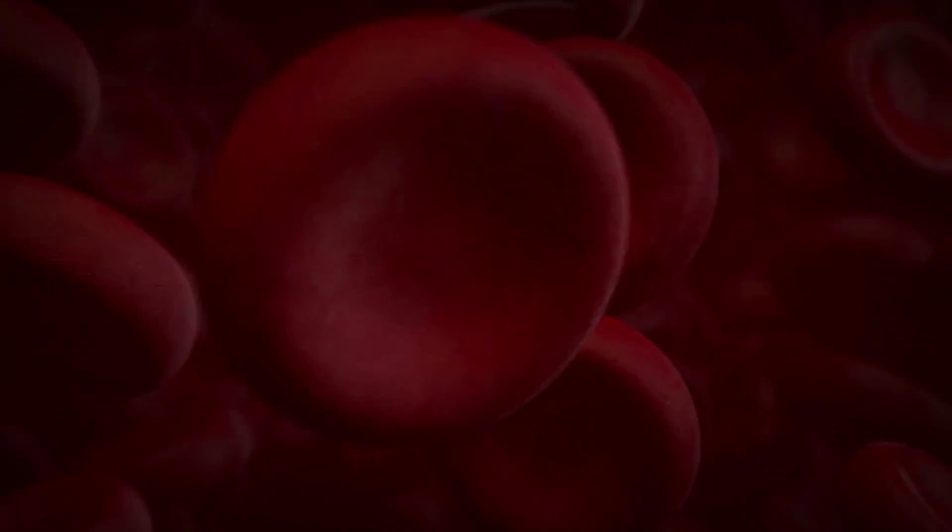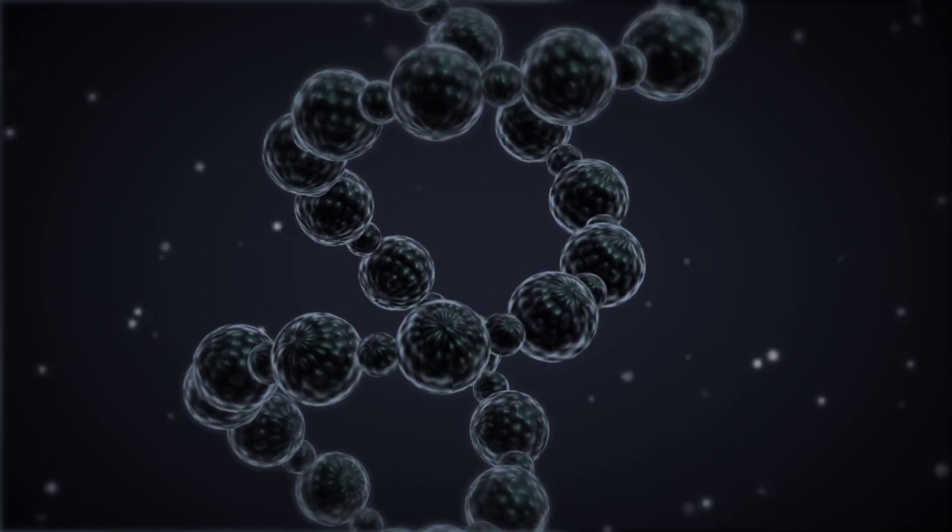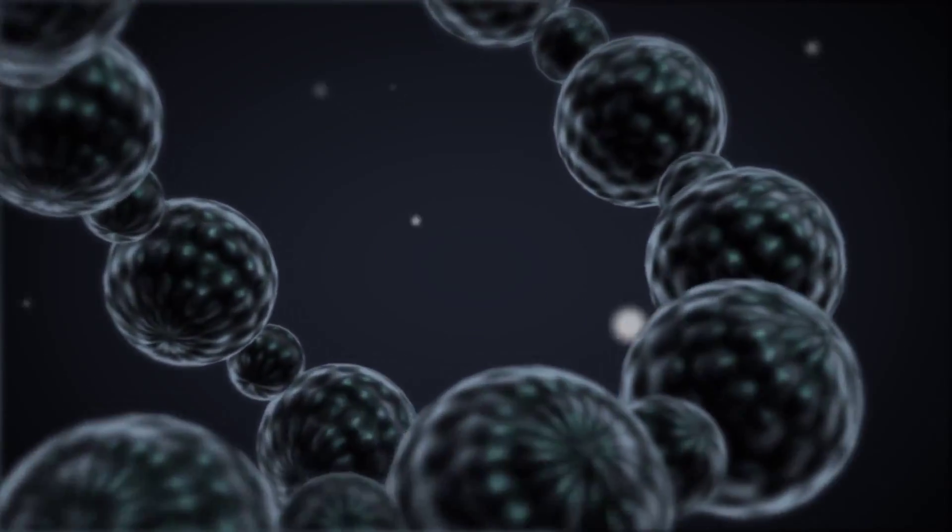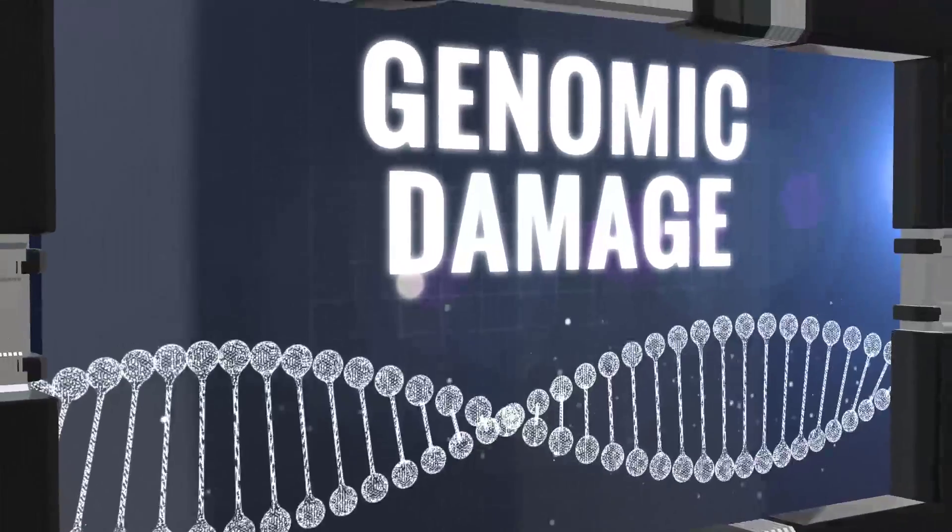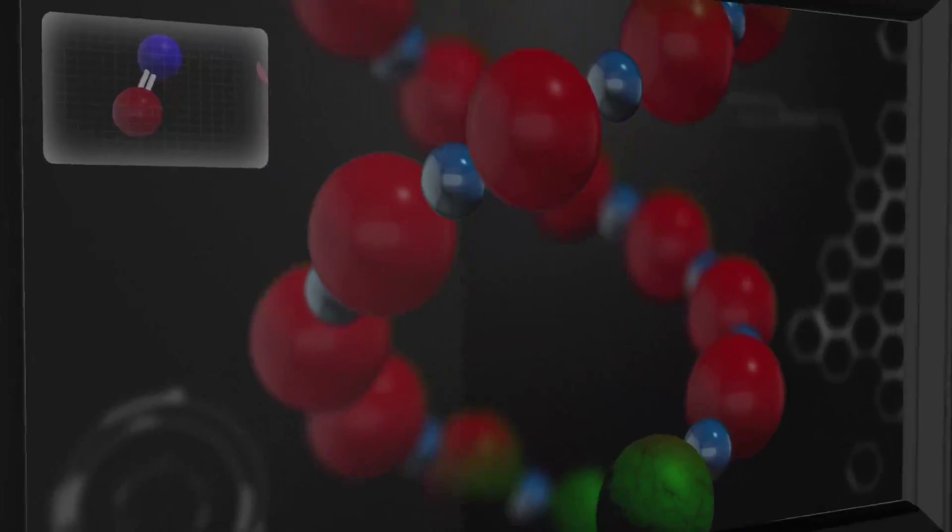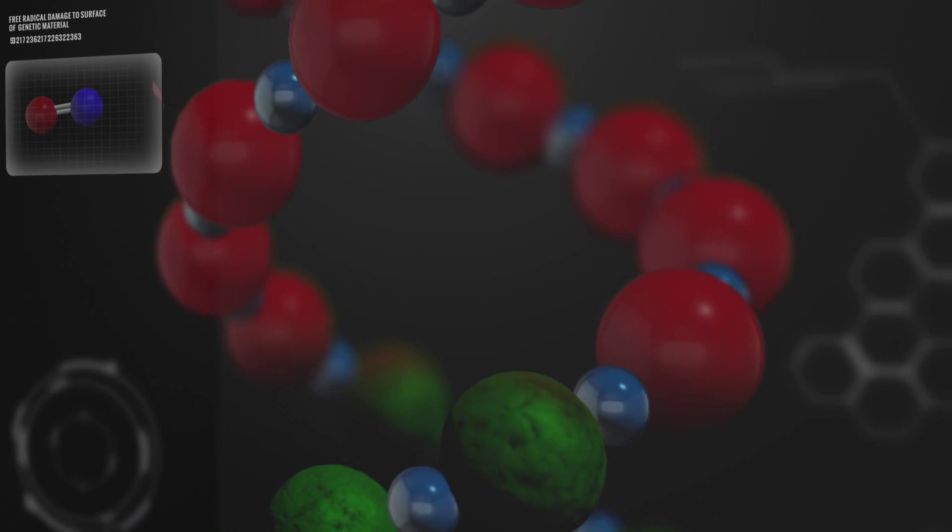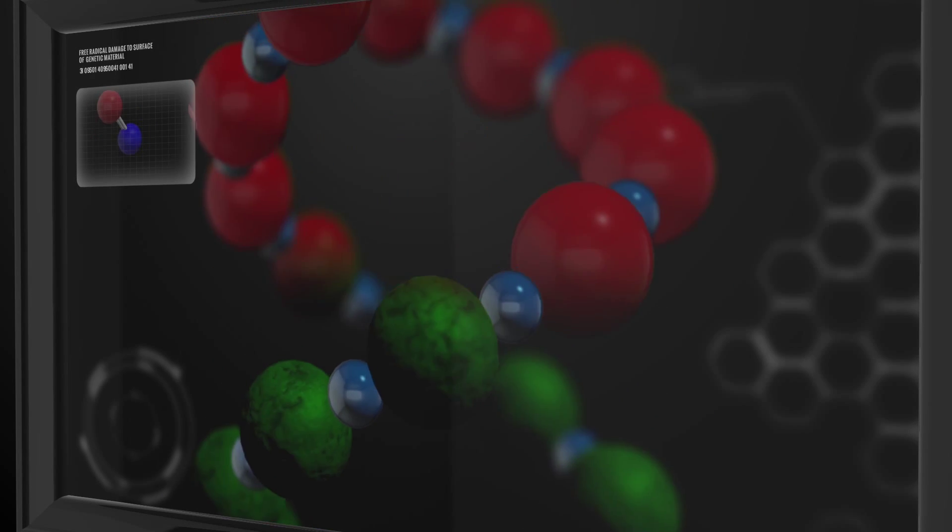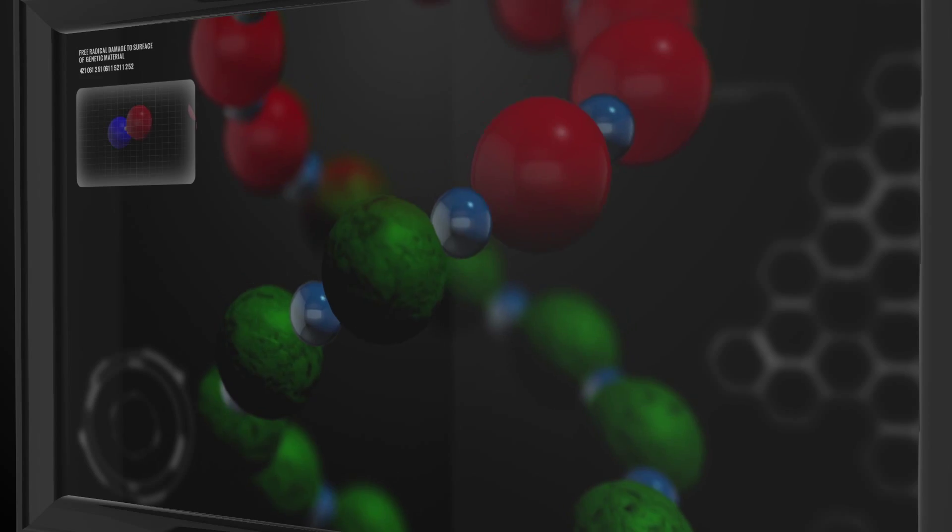If left unchecked, this dysfunctional response can result in damage to the genetic material of the cell. This brings us to genomic damage, the third stage of impairment. As mentioned, free radicals produced as a protective response damage the DNA, resulting in mutations that have serious biological consequences.